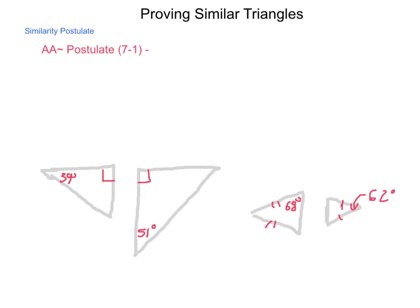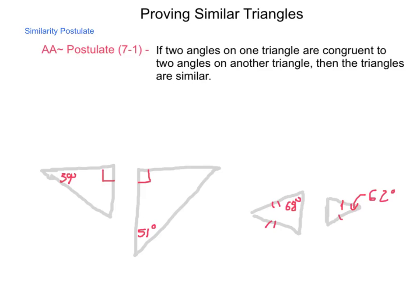So we're going to start with our postulate. Postulate 7.1 is the angle-angle similarity postulate. This one states, if two angles on one triangle are congruent to two angles on another triangle, then the triangles are similar. The reason this works is that we have the third angle postulate, which states that if two angles are congruent to one another, then the third one has to be.